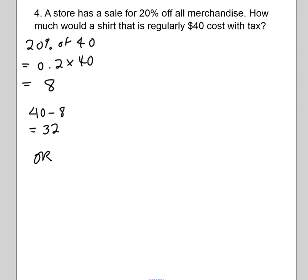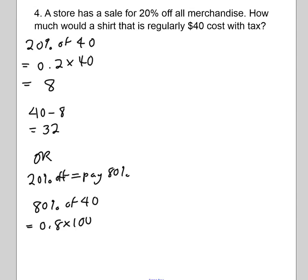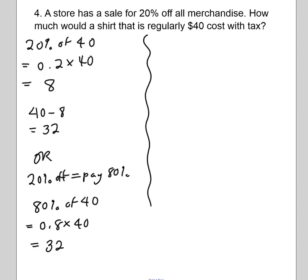Some of you might prefer a quicker method. Twenty percent off means you're paying 80 percent. So instead of finding 20 percent of $40 and subtracting, find 80 percent of $40 directly — turn it into a decimal and multiply by 40 — and you go directly to $32, which is the sale price.